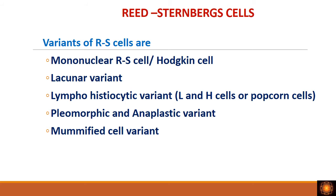The variants of the Reed-Sternberg cell are: the mononuclear RSL variant, the lacunar variant, the lymphohistiocytic variant, the pleomorphic and anaplastic variant, and the mummified cell variant.